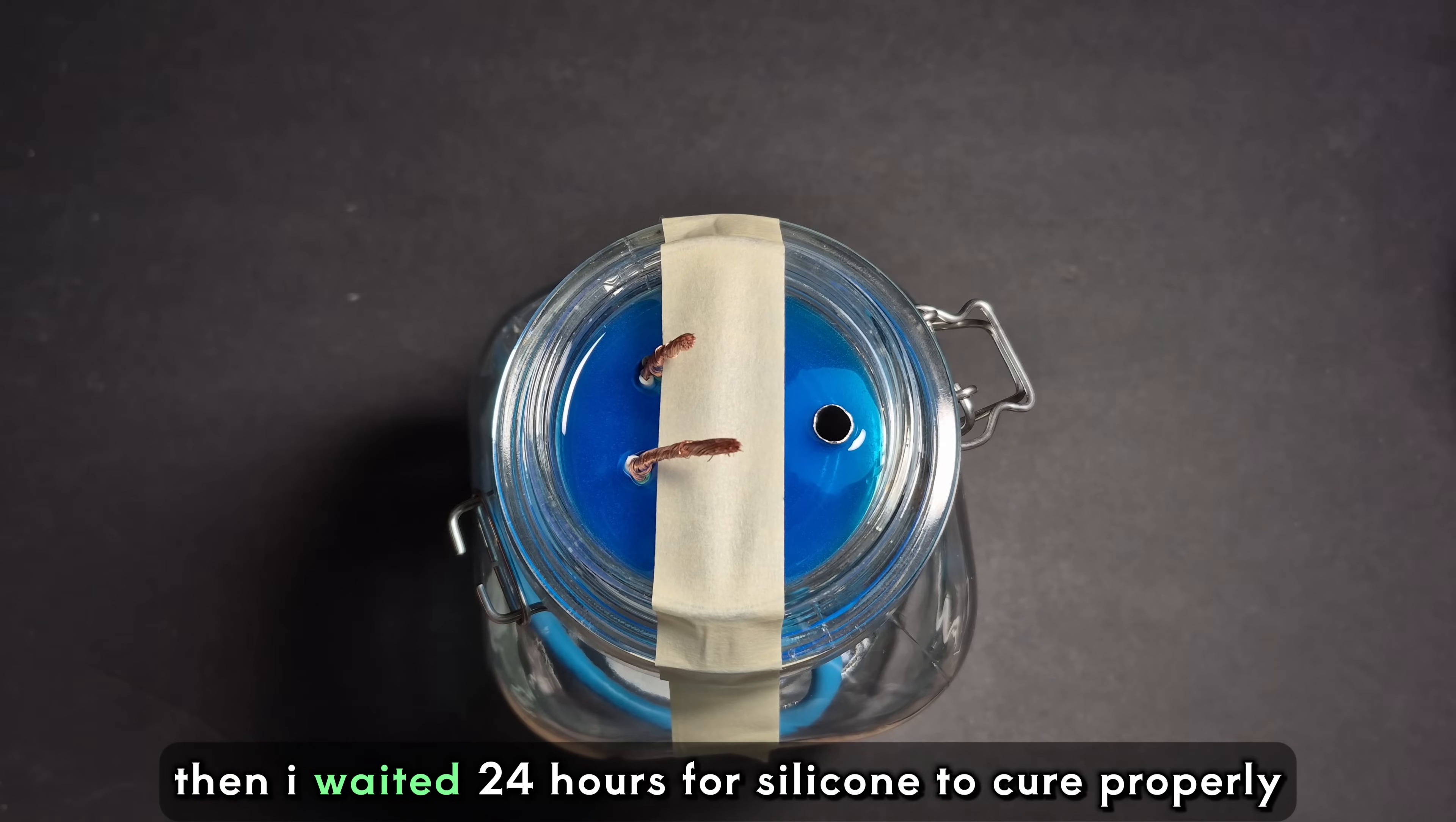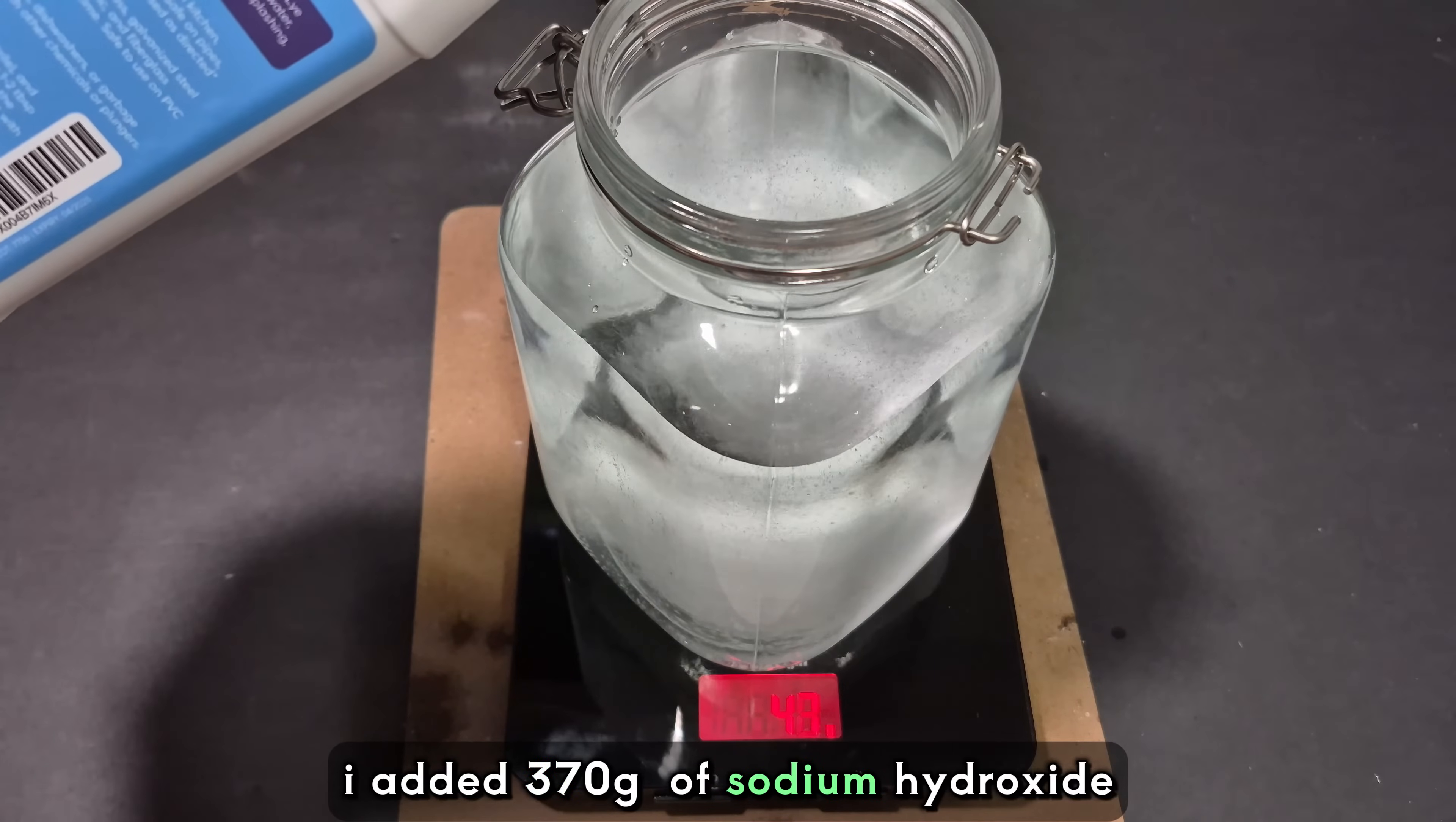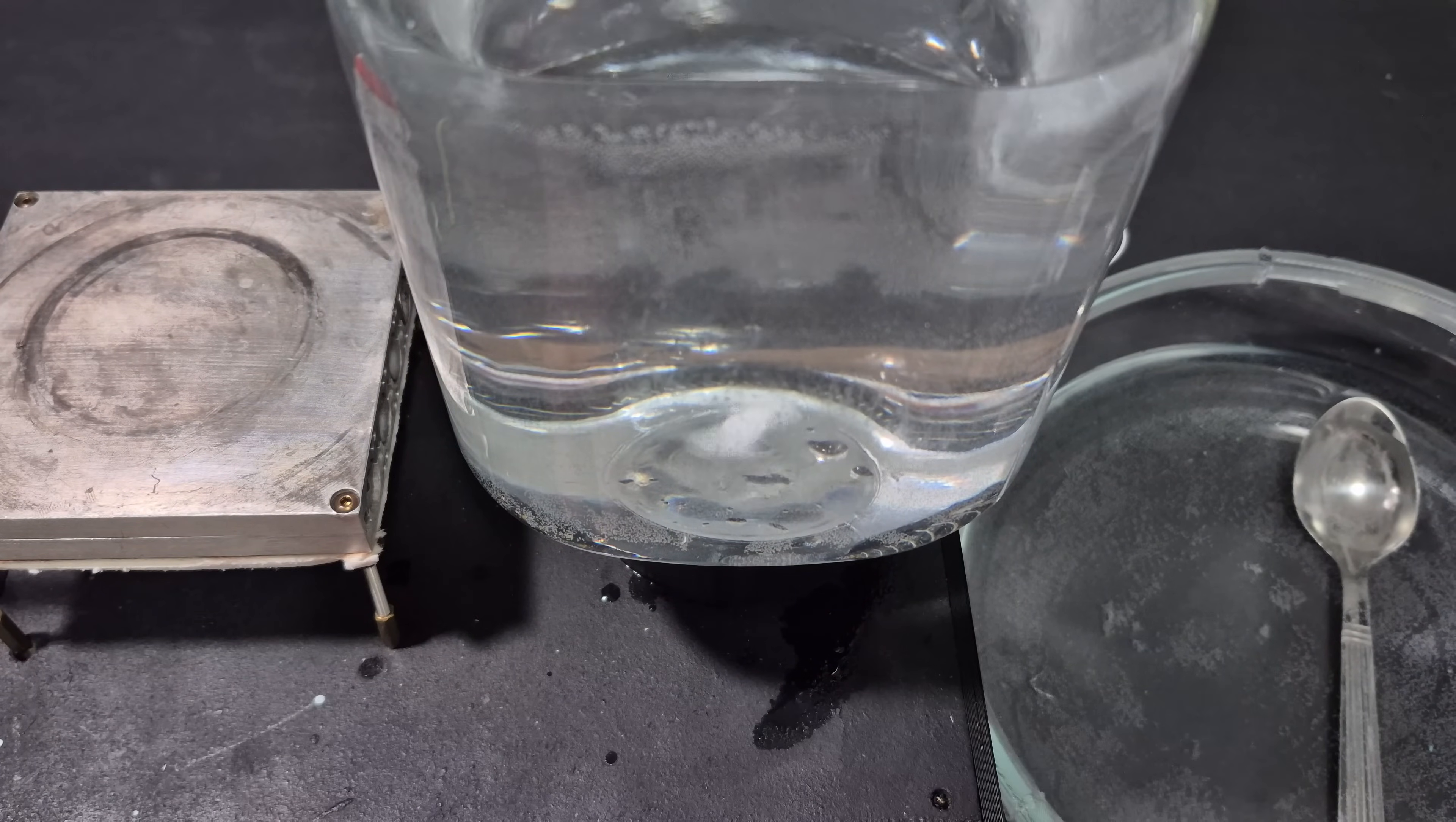After measuring 1,700 grams of distilled water, I added 370 grams of sodium hydroxide little by little. I used my DIY stirrer for the mixing action. Keep a cold water bath nearby if your container starts to get hot.